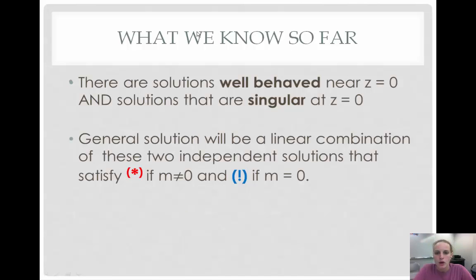So, now we can look at what we know so far. We know that there are solutions that can be well-behaved near z equals zero, and we also know that solutions can be singular at z equals zero. The general solution will be a linear combination of these two independent solutions that satisfy what we denoted as the red star, if m is not equal to zero, and what we denoted as the blue exclamation point, if m is equal to zero.